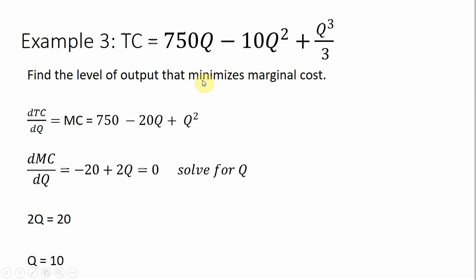In Example 3, we have another total cost equation. This time we want to find the level of output that minimizes marginal cost, so we need to first get the marginal cost equation. We get marginal cost by taking the derivative of total cost. We get $750, bring the 2 down in front giving minus 20q, bring the 3 down in front so the 3s cancel, leaving us with q squared. To minimize marginal cost, we take another derivative of marginal cost — the equation we're trying to minimize — getting minus 20 plus 2q. Set that equal to 0 and solve for q: q equals 10. So we're at the minimum of marginal cost when output is 10 units.